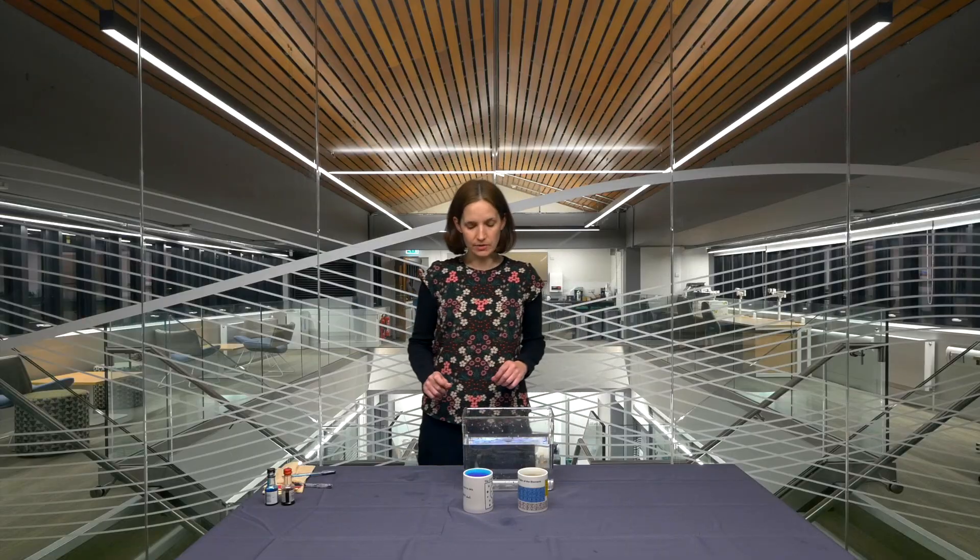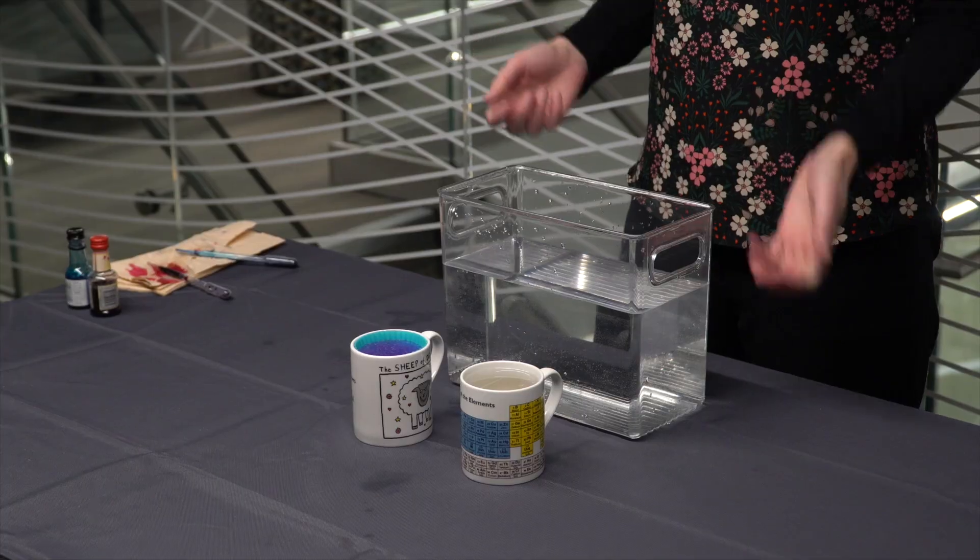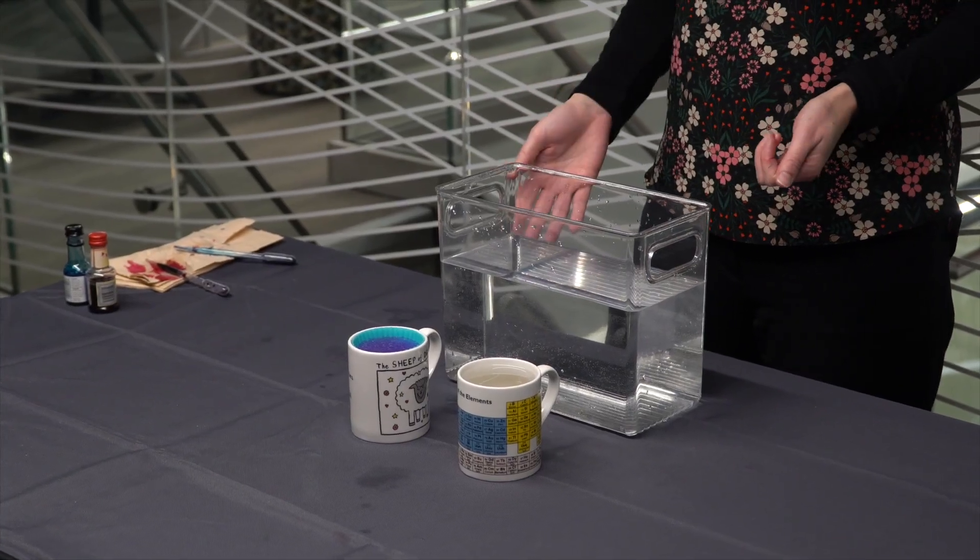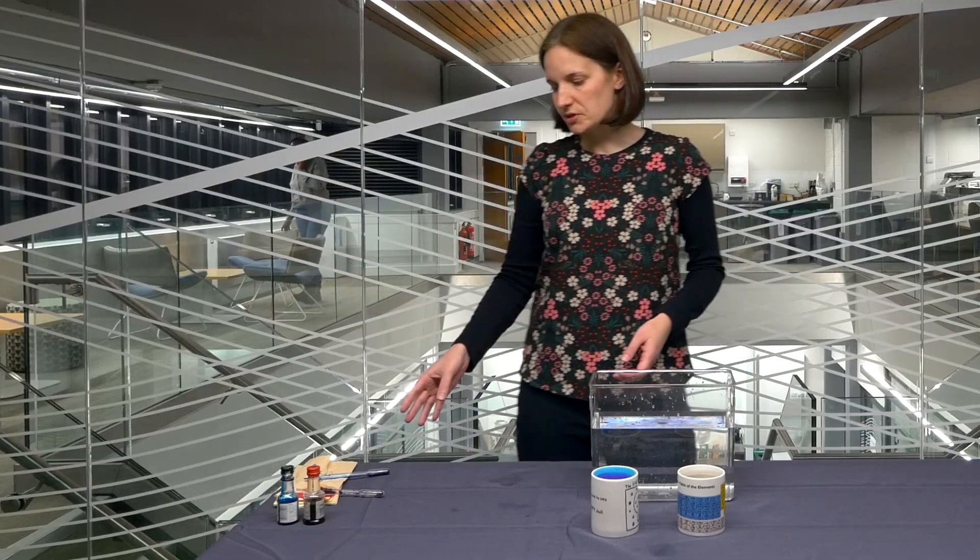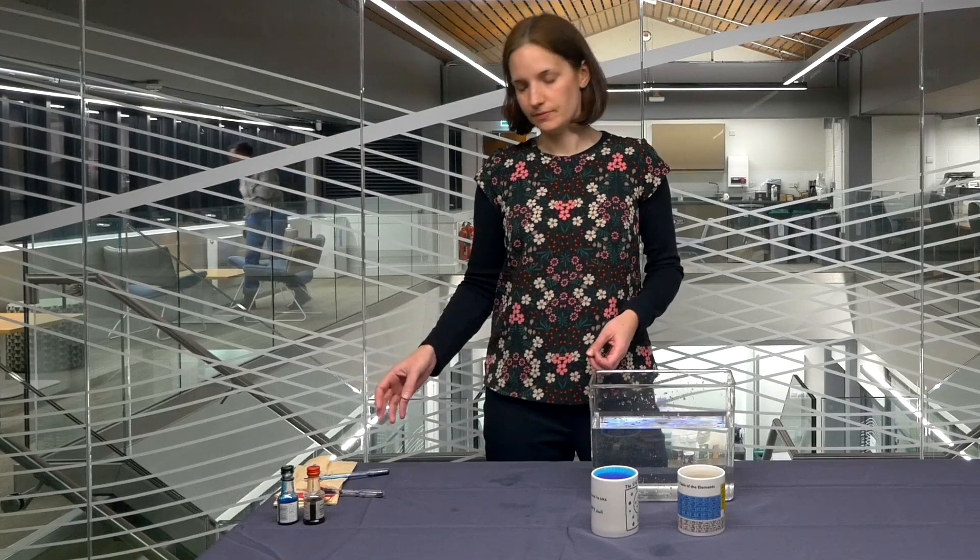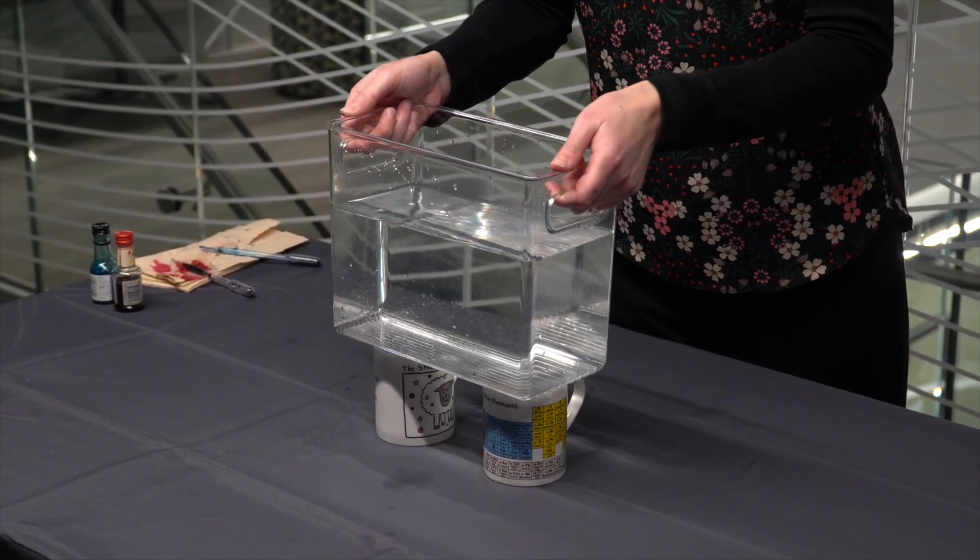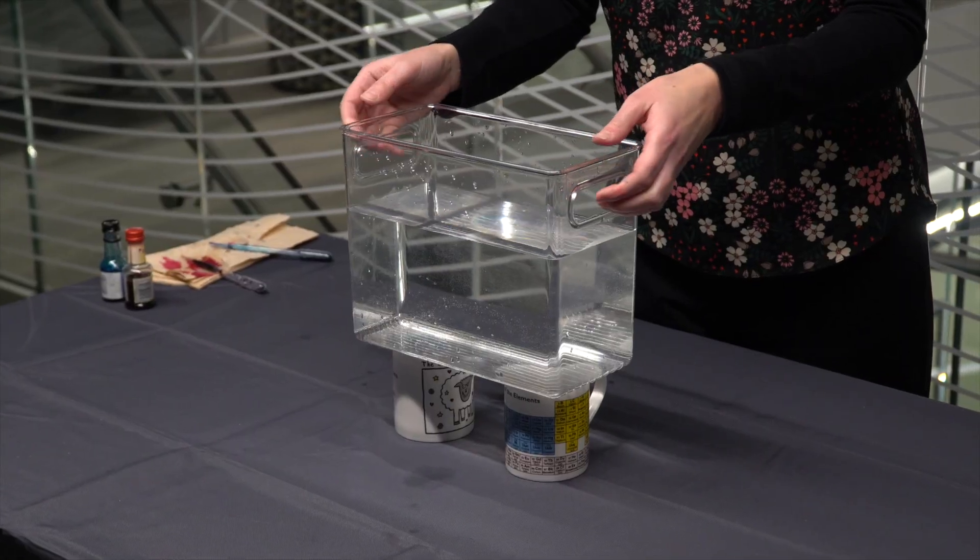What we're going to do is put the tank on top of these mugs, heat one side of the tank and cool the other. Then we're going to put in some food coloring, some dye. So we lift the tank onto the mugs and we'll just give it a few seconds to stabilize.